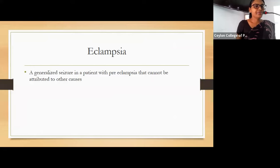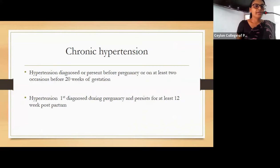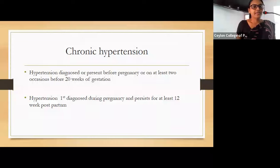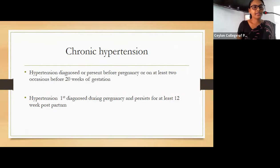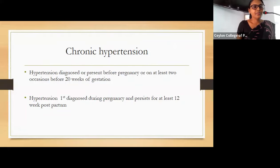Eclampsia is defined as a generalized seizure in a patient with preeclampsia that cannot be attributed to other causes. Chronic hypertension is defined as hypertension diagnosed or present before pregnancy, or on at least two occasions before 20 weeks of gestation, or first diagnosed during pregnancy but persisting for at least 12 weeks postpartum.